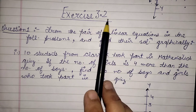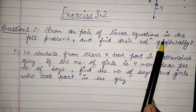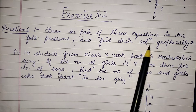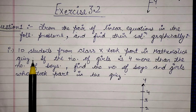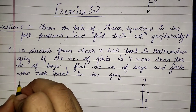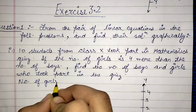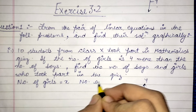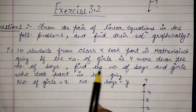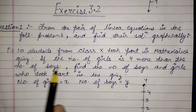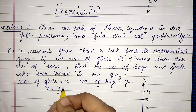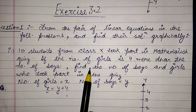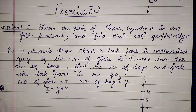Now moving to exercise 3.2, question 1: Form a pair of linear equations from the problem and find their solution. 10 students from class 10th took part in a mathematics quiz. Let the number of girls be x and the number of boys be y. The number of girls is four more than the number of boys.